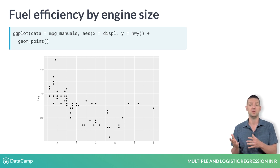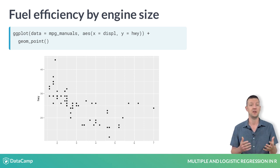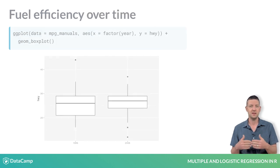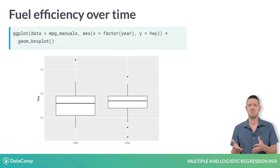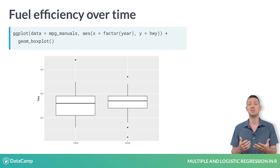We could certainly fit a linear regression line through these points, but that would only tell us part of the story. The truth is that while these cars were popular in each of the 10 years between 1999 and 2008, the observations we have are only from 1999 or 2008. Did fuel economy improve over time? These side-by-side box plots suggest that it might have, but does that represent a feat of engineering or merely a change in consumer taste?